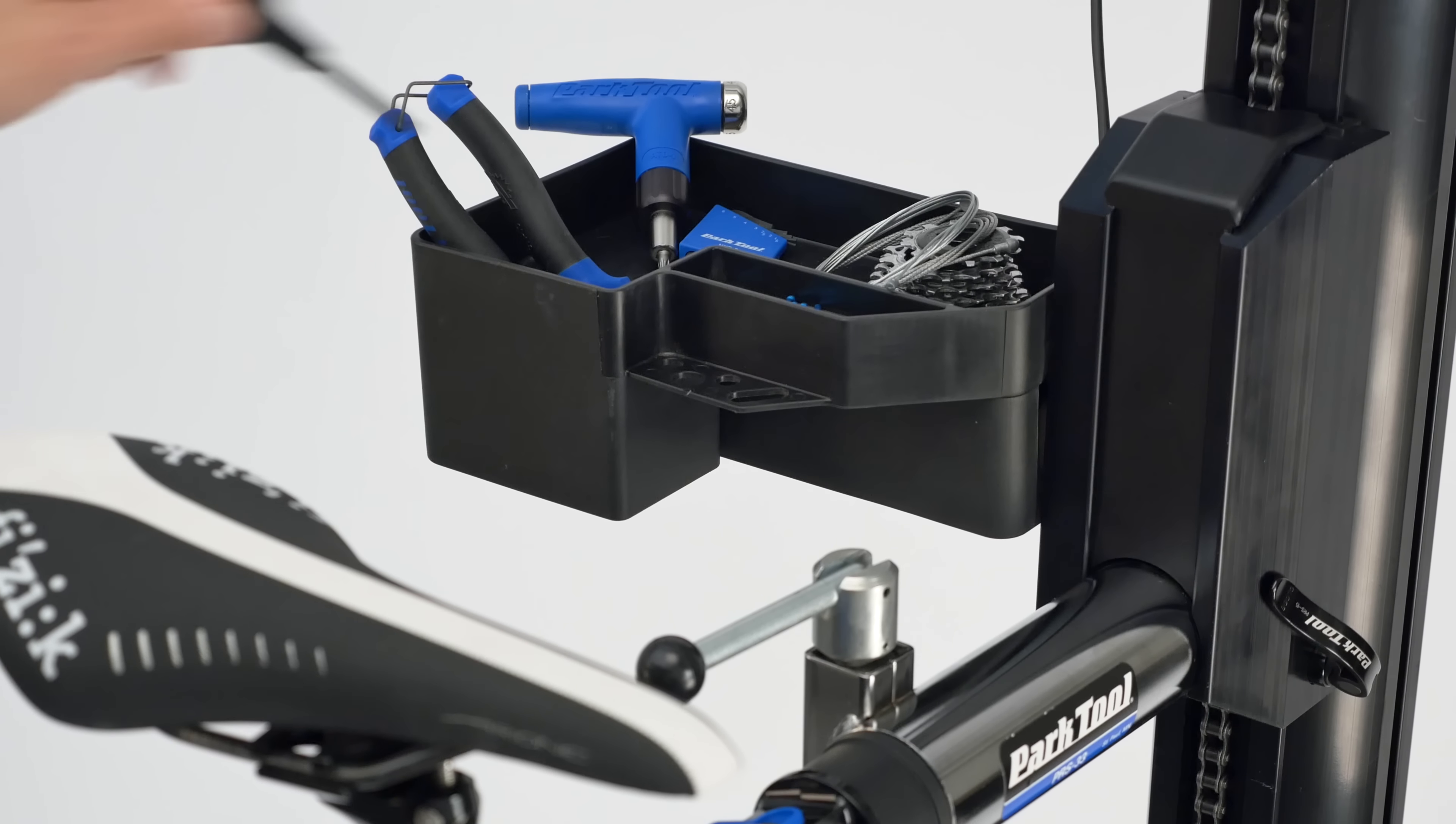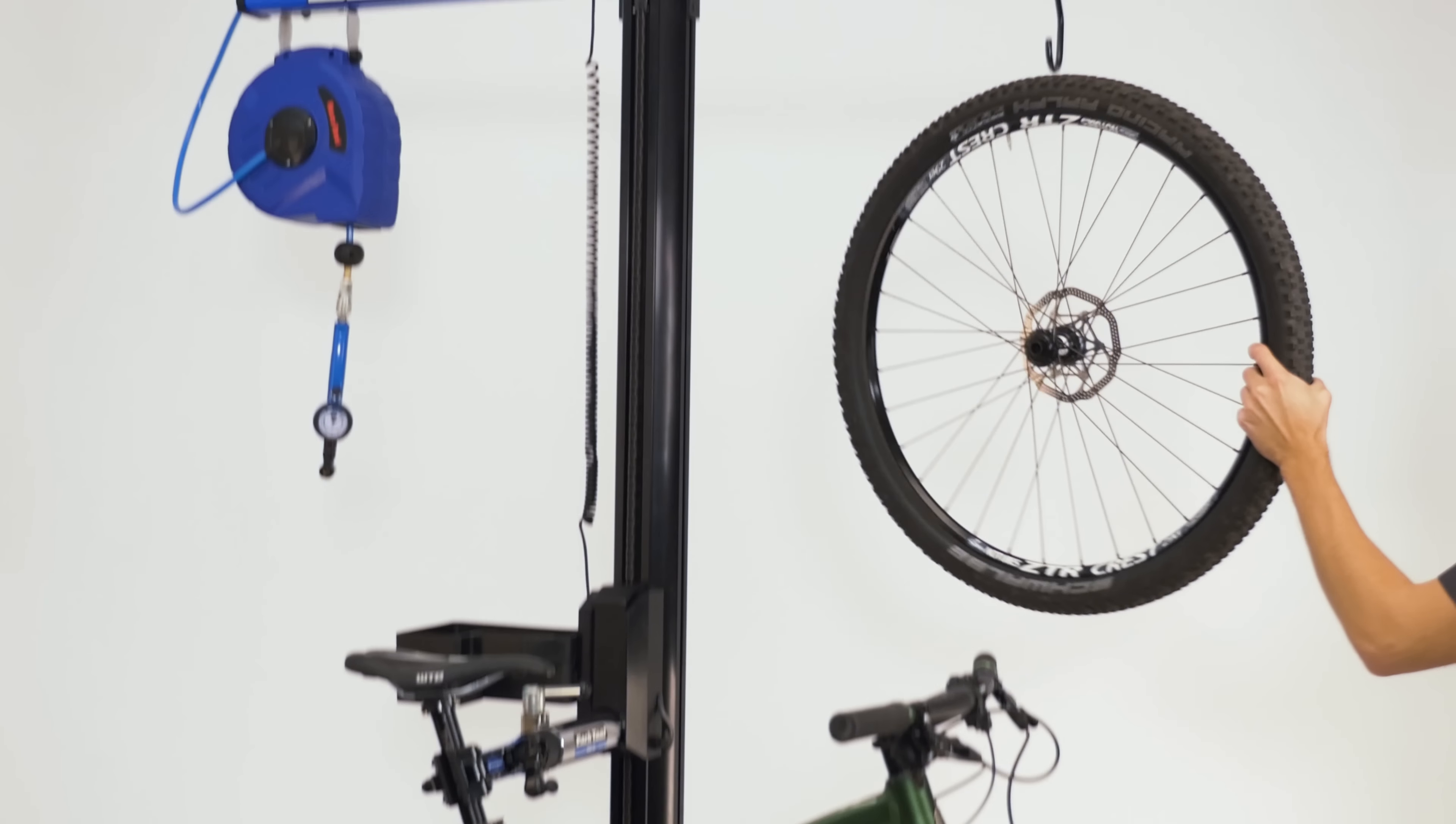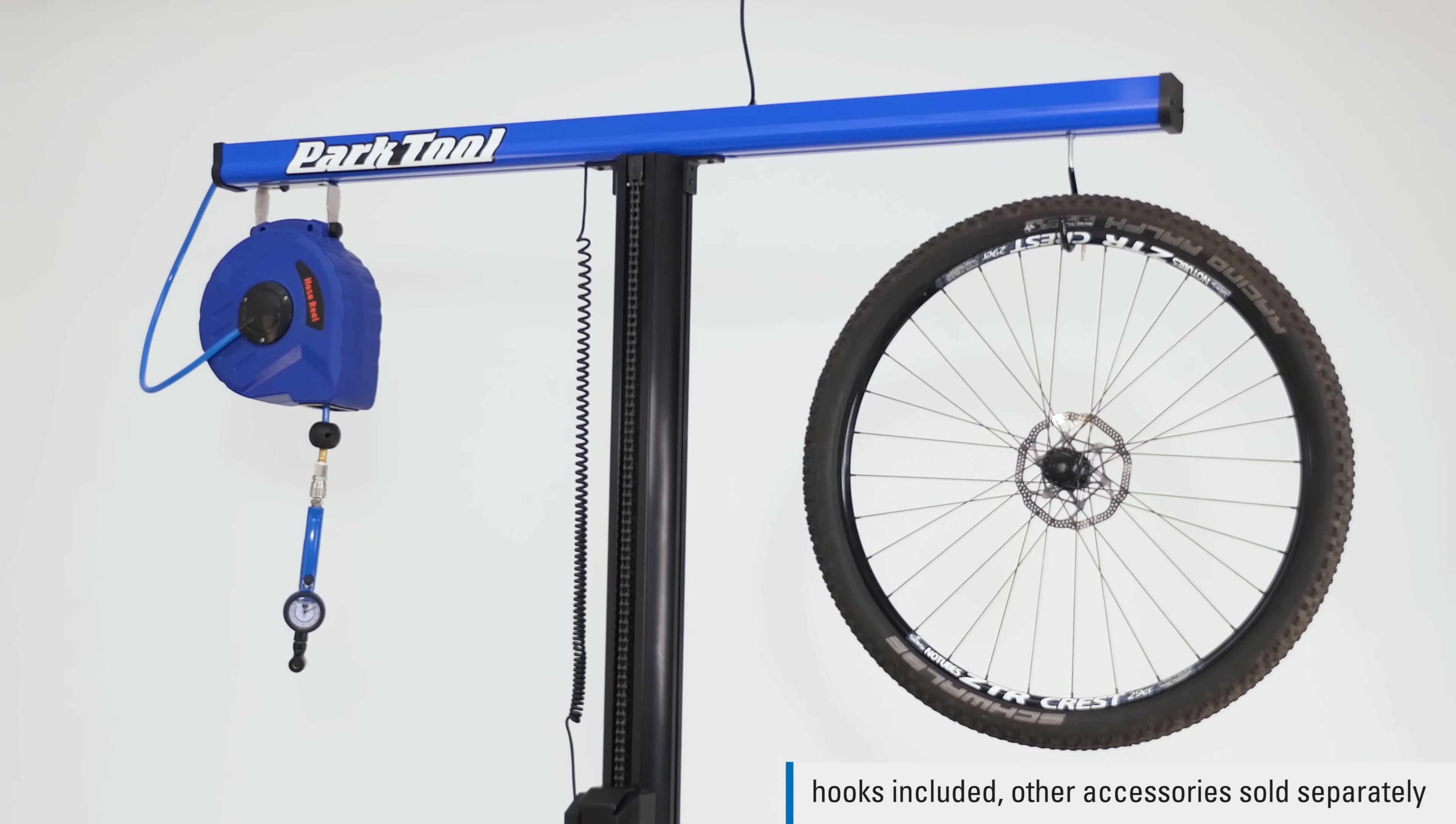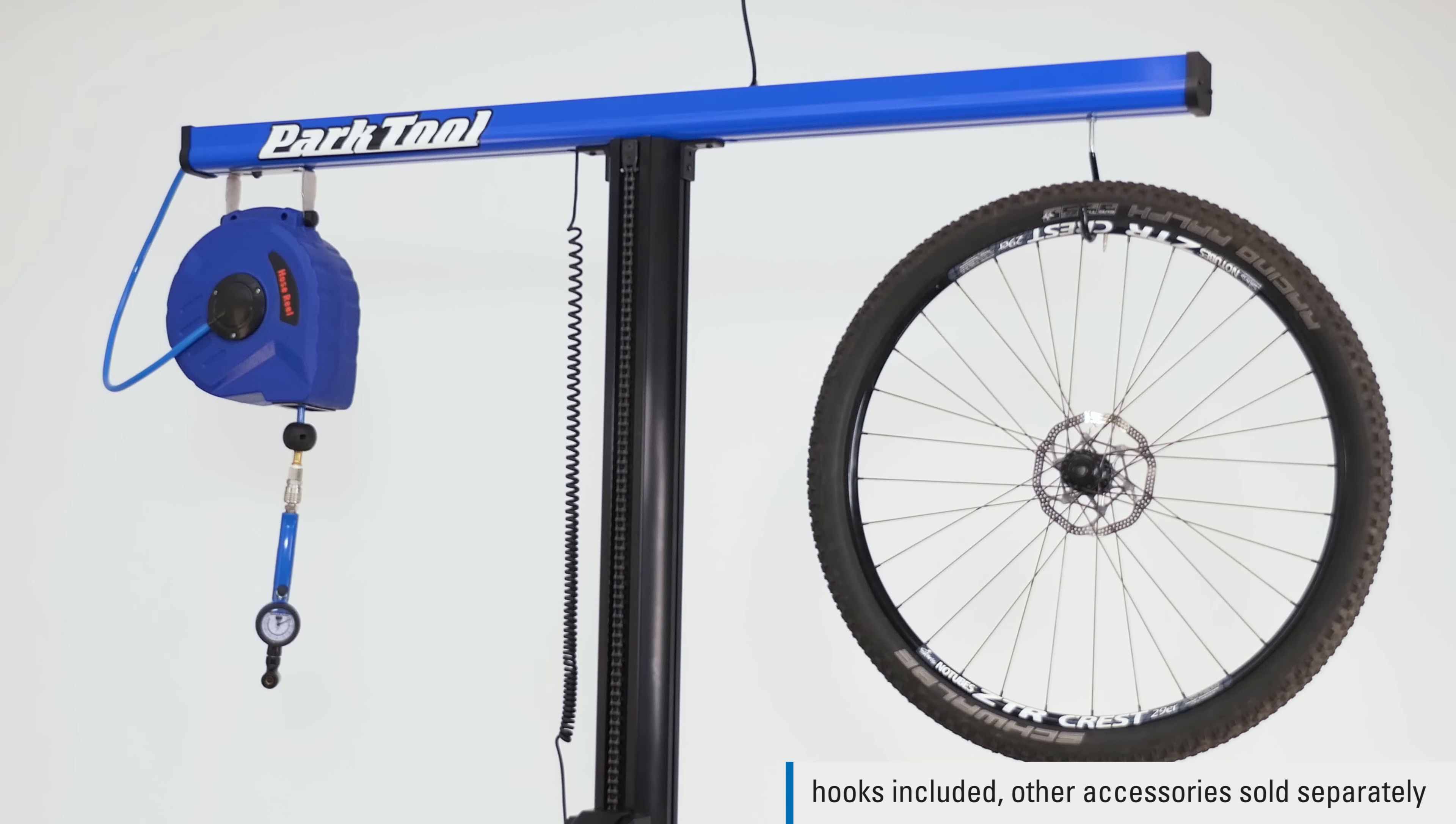The integrated work tray keeps tools handy, and the integrated accessory bar can be used to hang wheels, air hoses, lights, and almost any accessory you can think of.